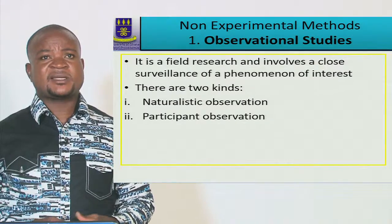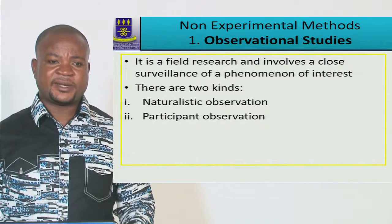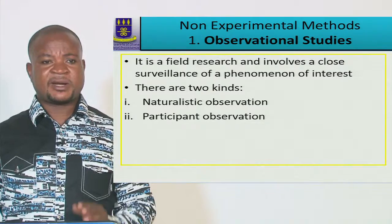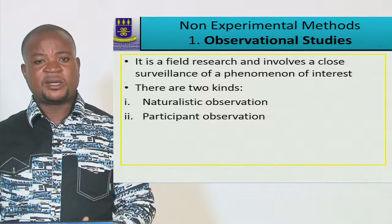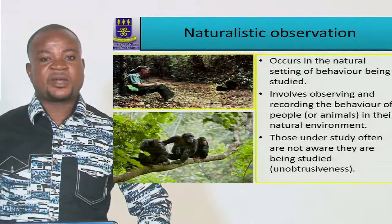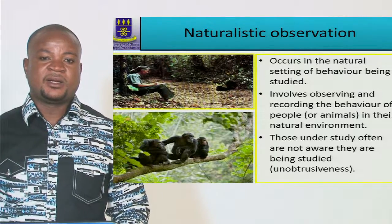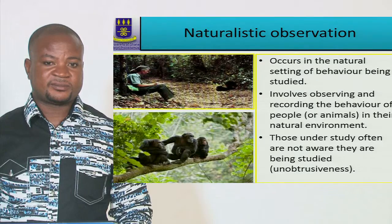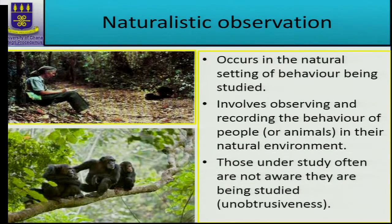In observation, you just want to see what is happening. You can sit behind and see what is happening, or you can take part in it while observing. Naturalistic observation occurs in the natural setting where the behavior is being studied — observing and recording the behavior of people or animals in their natural environment. Those under study most of the time are not aware they are being studied, which we refer to as unobtrusiveness.